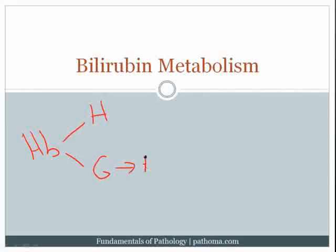The globin is simply protein and will be broken down into amino acids, which will be recycled. The heme consists of iron and protoporphyrin. The iron will be recycled, and the protoporphyrin will eventually be converted into bilirubin.